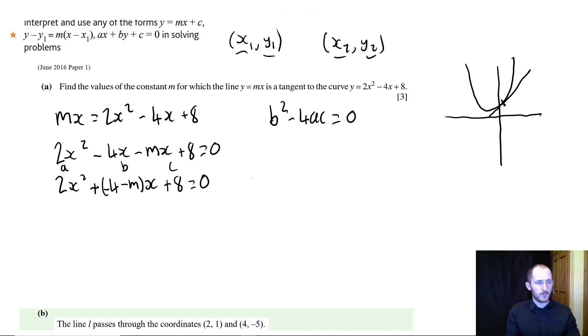So what that means is that there should only be one solution to this equation. So what we're going to use is the fact that b squared minus 4ac should equal zero. So now what we have is minus 4 minus m squared minus 4ac equals zero. So let's expand this. It's going to be a bit interesting. Minus 4 times minus 4 is 16.